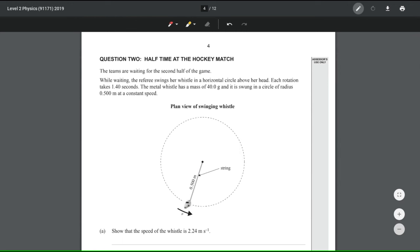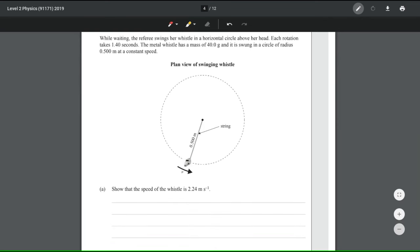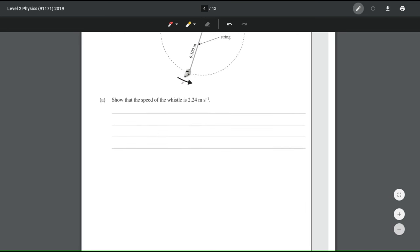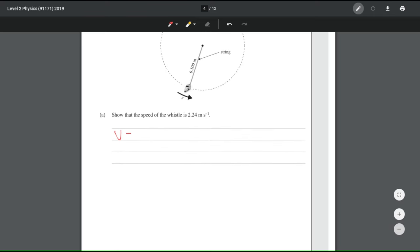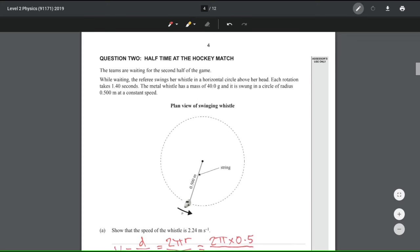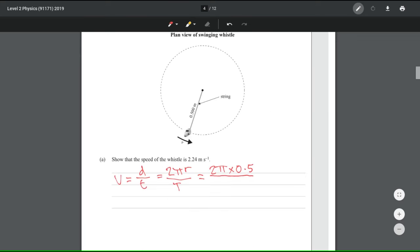On to question two. The teams are waiting for the second half of the game. Referee swings her whistle in a horizontal circle. Each rotation takes 1.4 seconds. The metal whistle has a mass of 40 grams and is swung in a circle of radius 0.5 at a constant speed. The first question asks us to show that the speed of the whistle is 2.24 meters per second. That is just a simple matter of velocity equals distance over time. Where our distance is 2 pi r, and our time is our period. Replacing our radius with the actual value, the radius is 0.5 meters. And our period is 1.4 seconds. Putting that into our calculator, I indeed get 2.24 meters per second.